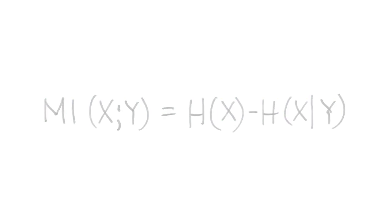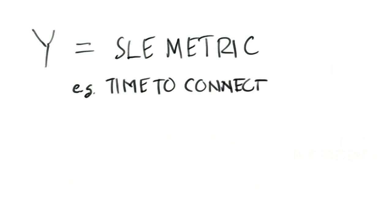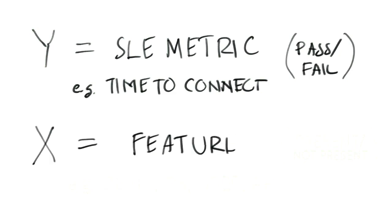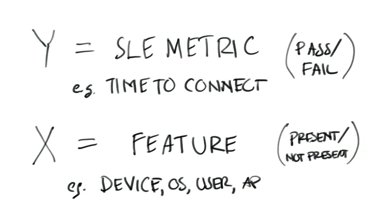Now what does this mean? Let me give you an example. Let's say Y is one of our random variables that we want to predict, and represents the SLE metric time to connect, and it can be one of two possible values: pass or fail. We have another random variable X that represents a network feature that can have a possible value of present or not present. An example of a network feature can be a device type, OS type, time interval, or even a user or an AP — any possible feature of the network can be represented by the random variable.